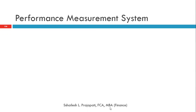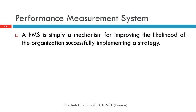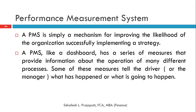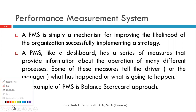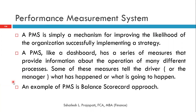In the Balanced Scorecard we have a Performance Measurement System, which is called PMS. PMS is a mechanism for improving the likelihood of the organization successfully implementing a strategy. As we have seen in our earlier lectures, strategies involve implementation. PMS is like a dashboard — it has a series of measures that provide information about the operations of many different processes. Some of these measures tell the manager what has happened or what is going to happen. An example of PMS is the Balanced Scorecard approach.